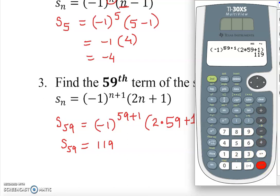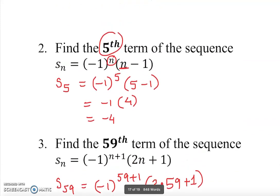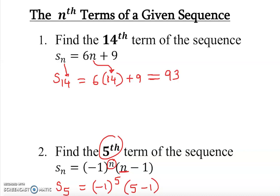This gives you 119. So that's how you use your calculator. This is straightforward, as you see. You understand how to find the nth term. We have these three examples, and I hope you understand it. Thank you.